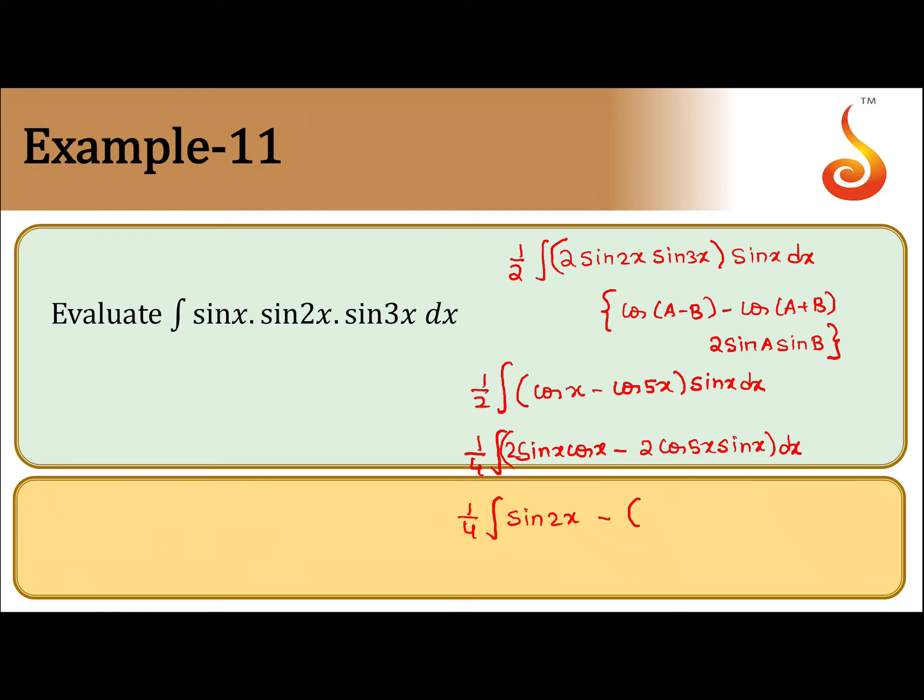Sin 6x minus sin 4x, so total dx. Now we integrate one by one. If we integrate what happens: 1/4...